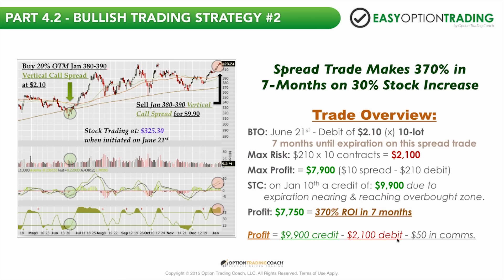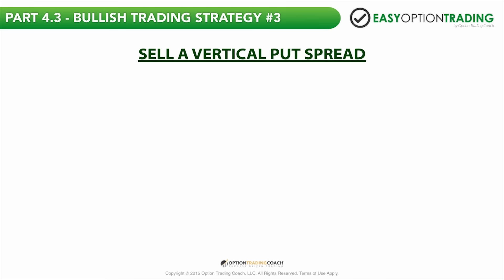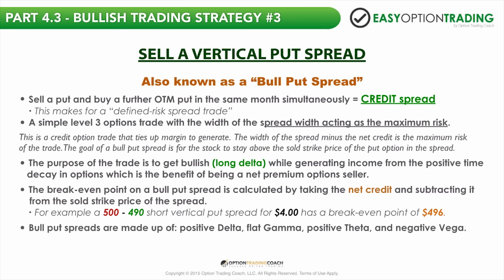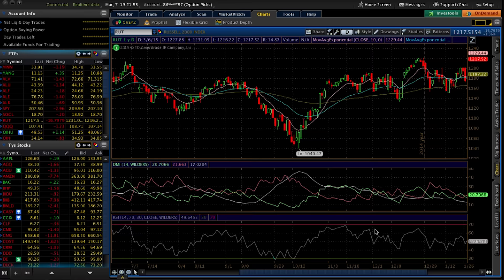Now I'm going to teach you how to sell a vertical put spread. The purpose of the trade is to get bullish while generating income from positive time decay in options. This trade has positive theta, and it's a great way to have long deltas. Bull put spreads are made up of positive delta, flat gamma, positive theta, and negative vega. This is something you can do on all different securities.